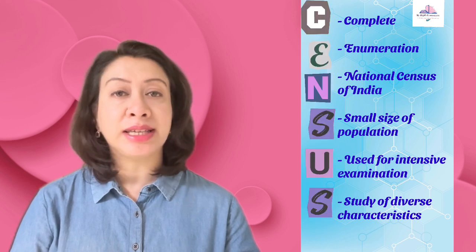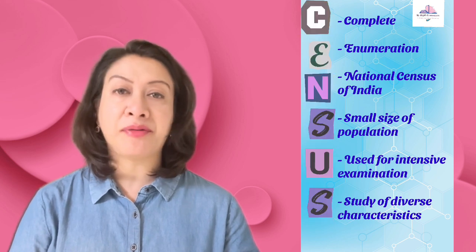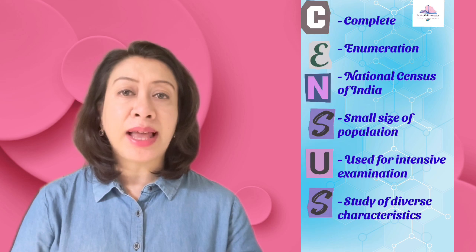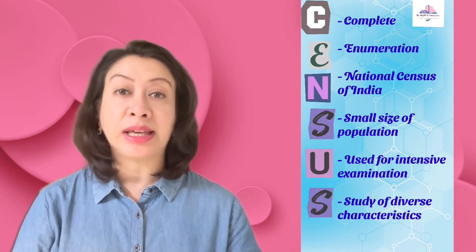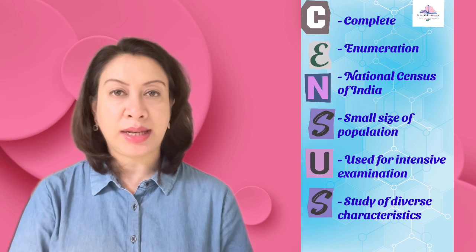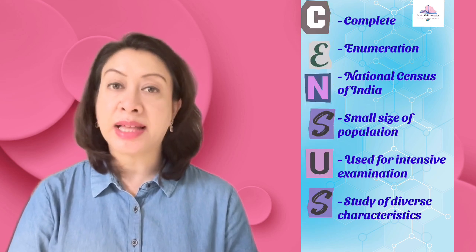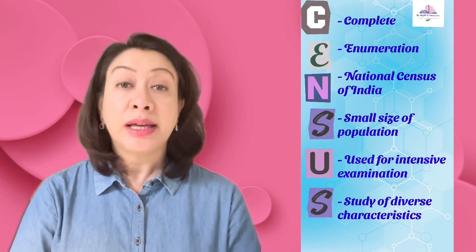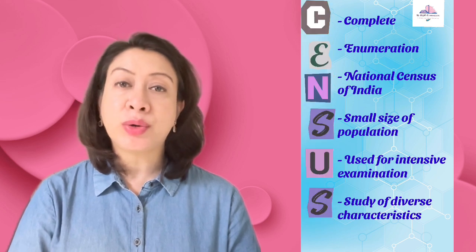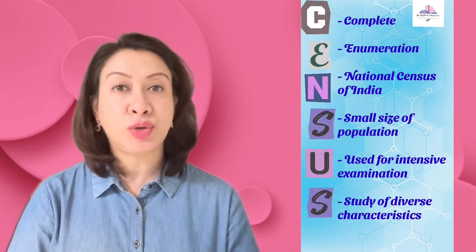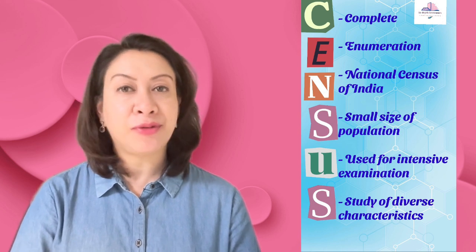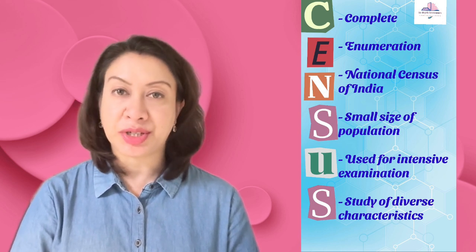Information collected in the census includes demographic information such as age, race, and gender, as well as information about housing, income, and employment. The next three letters S, U, and S will help us understand the suitability of this method. This method is suitable when the area of study is small. It is used for intensive examination to obtain accurate information, and it helps to study the diverse characteristics of the population.